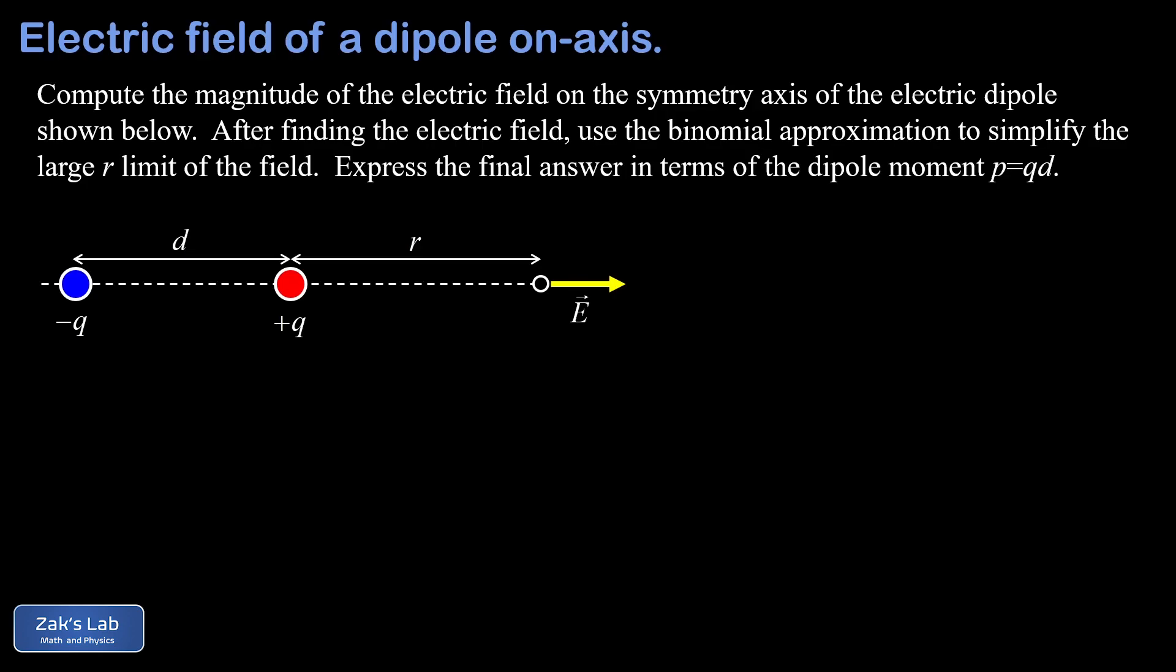So for the setup of the problem, we have an electric dipole in our picture, and that's a pair of charges with magnitude q, one of them is positive, one is negative,